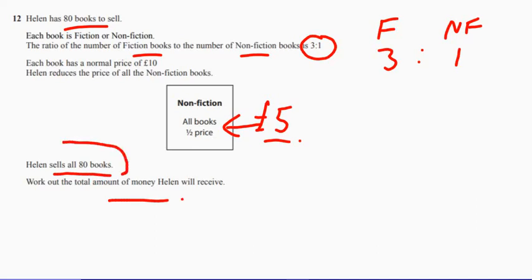Well, she's got 80 books. She sells all 80 books. So how many of each type have we actually got? They're in a ratio of three to one.